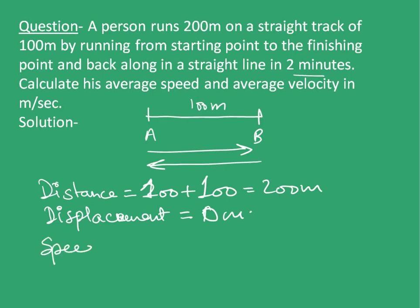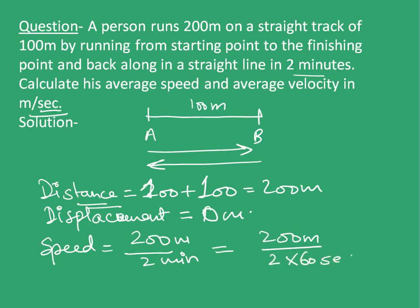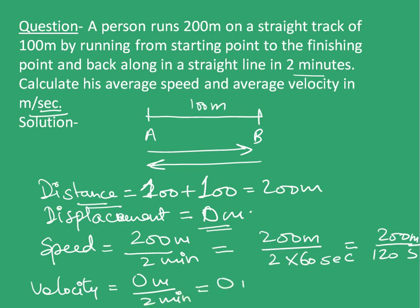So the speed will be distance traveled upon total time taken, that is 200 meters upon 2 minutes. Now we have been asked to calculate in meters per second, so we can convert this minutes into seconds. So 200 meters upon 2 into 60 seconds. So our answer will be 200 upon 120 meter per second. Similarly, velocity is equal to total displacement, that is 0 meters upon 2 minutes, which is equal to 0 meter per minute or 0 meter per second.